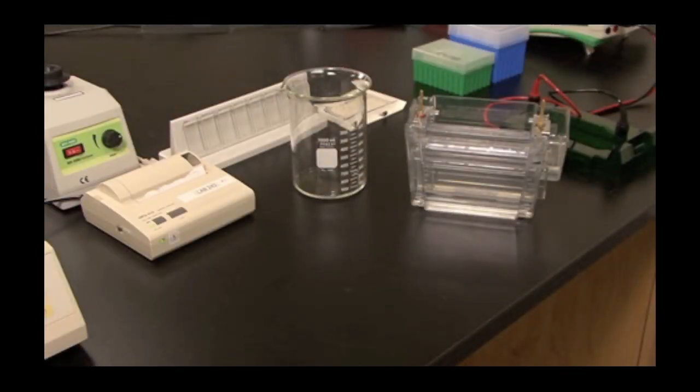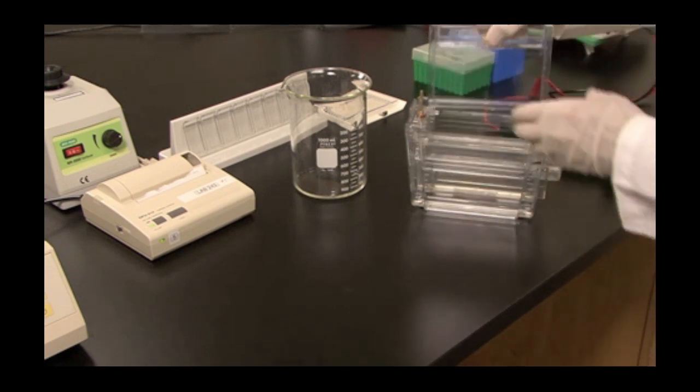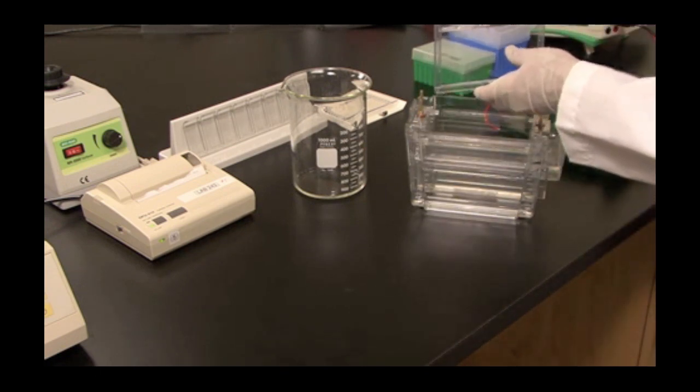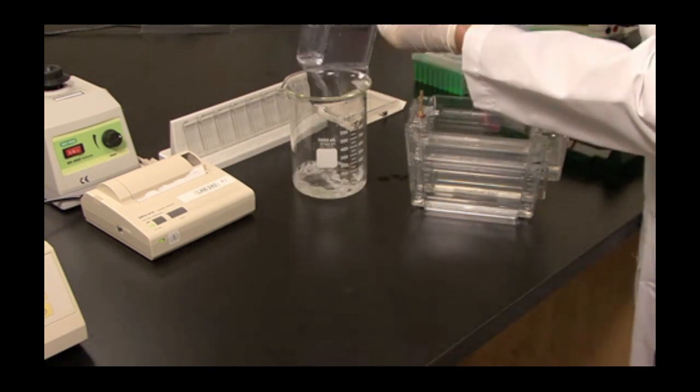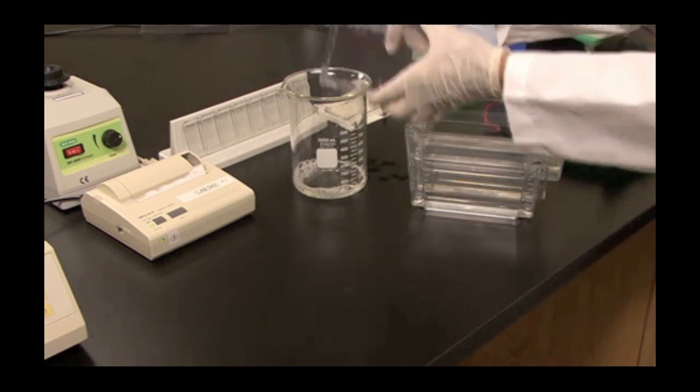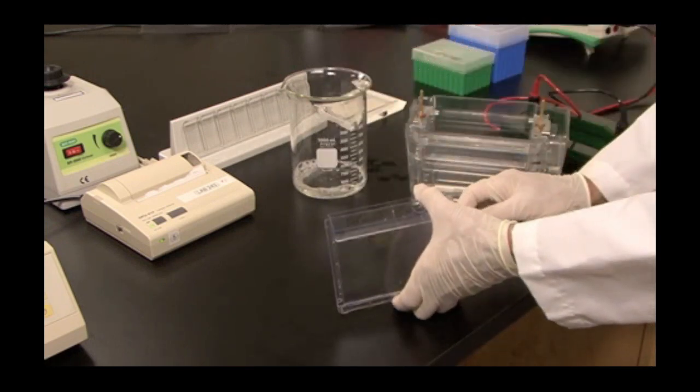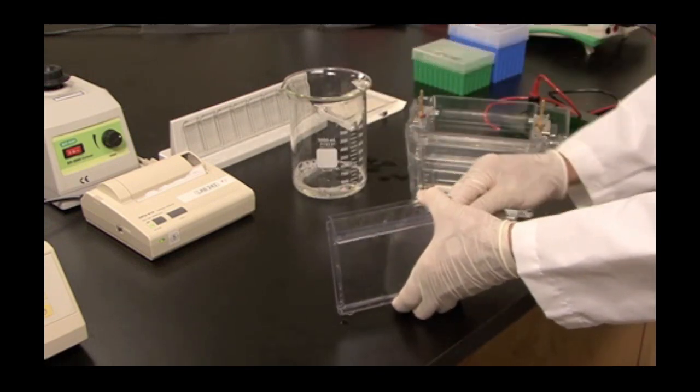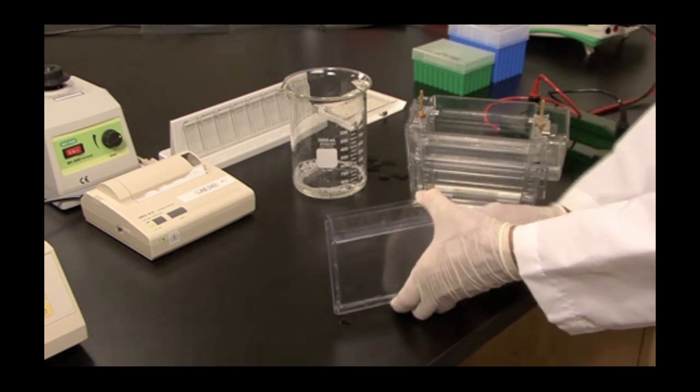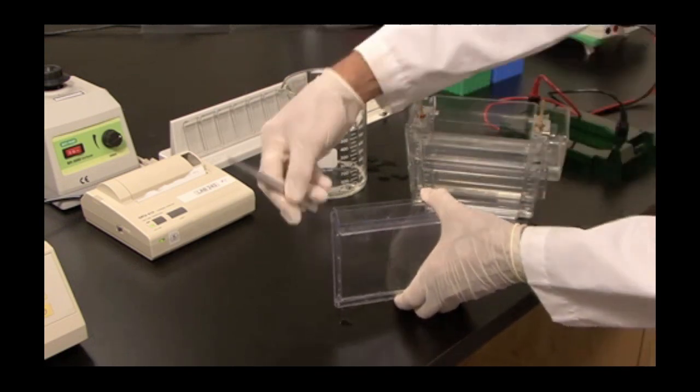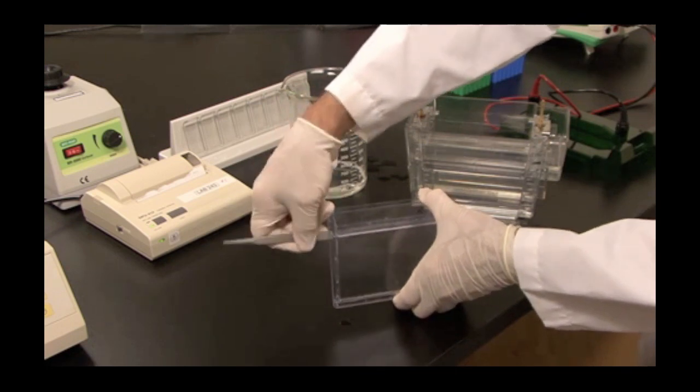The second dimension gel has now completed running. You know it is finished when the dye front has reached the bottom of the gel. We are now going to remove the gel from the Criterion cassette and prepare the gel for staining. Remove the gel from the gel box. Pour out the upper buffer. And open the gel by using forceps or a similar tool.